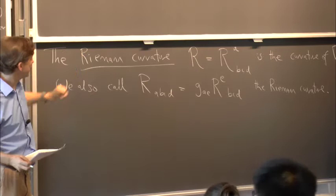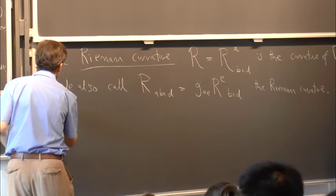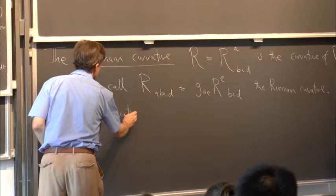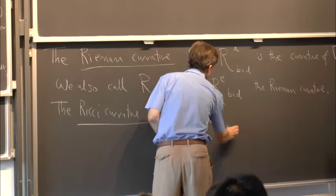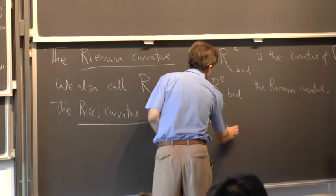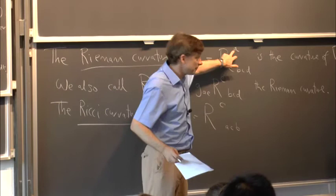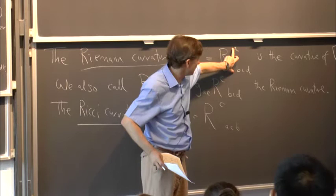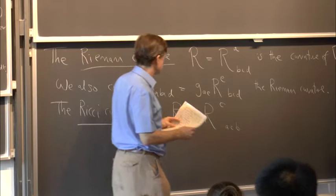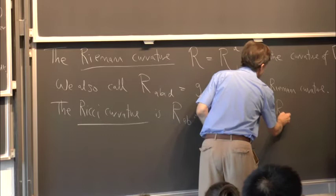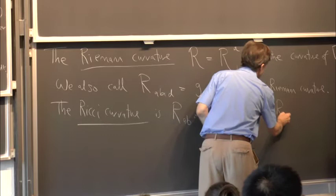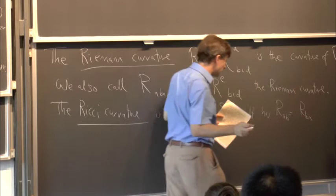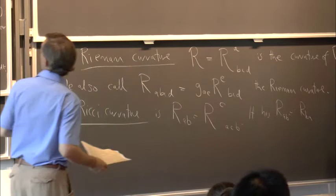The Riemann curvature is a complicated beast. There are two simpler things you can make from it. The Ricci curvature is R_AB = R^C_ACB — you take the trace on the upstairs index and the middle downstairs index. There are three different ways of taking traces, but if you trace on A and B you get zero, and if you trace on A and D you get minus the Ricci curvature. So there's only one interesting way. The result satisfies R_AB = R_BA, so the Ricci curvature is a symmetric tensor of the same type as the metric itself.